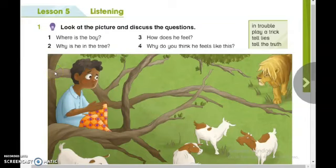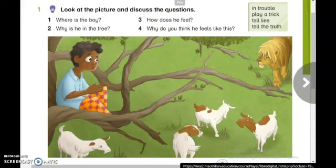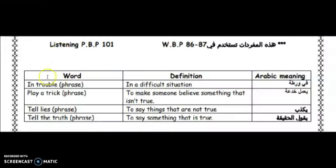Open your pupils' book, page 101, lesson 5, listening. As you can see, we have a box with words. Let us explain these words. The first one is 'in trouble,' which means in a difficult situation — 'in trouble.'